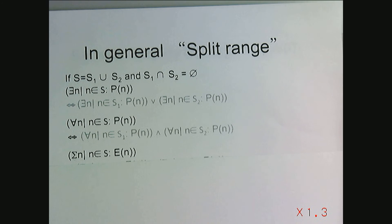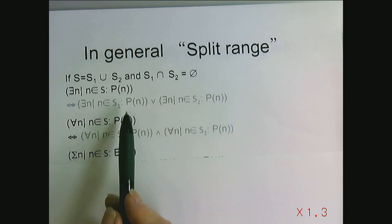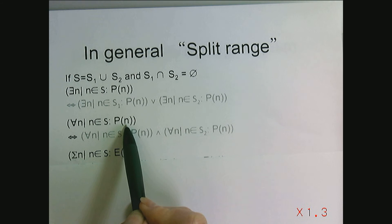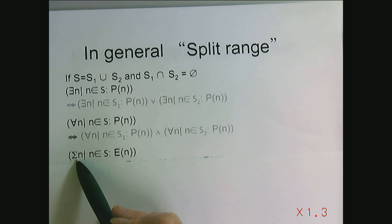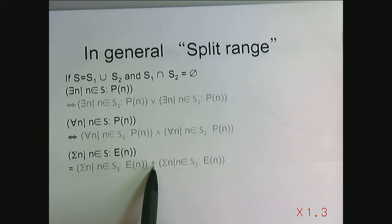This actually extends to quantifiers beyond those where we are working with predicates. We could also work with algebraic expressions. The sum quantifier is the one that you saw in high school algebra. If we looked at the sum of N where N is in S of some algebraic expression, we could break it into pieces and write it as the sum over all N in S1 of that expression plus the sum over all N in S2 of that same expression. And if you evaluate this, you're just going to get a number and these two numbers will be equal to one another.